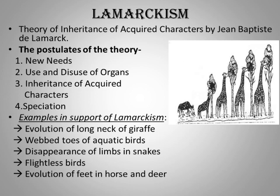Another example is the webbed toes of aquatic birds. Aquatic birds like ducks, swans, and geese are thought to have arisen from terrestrial ancestors. The web developed between the toes because ancestors had to continuously spread their toes; the skin in between stretched, helping them wade in water, resulting in webbed feet. Their wings also reduced because they did not use them much for flying, remaining in water and using feet for movement.